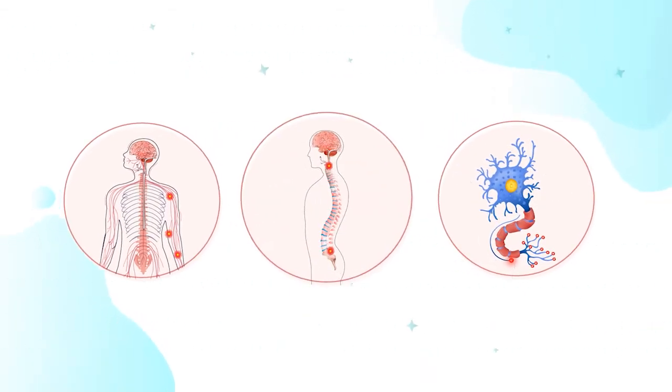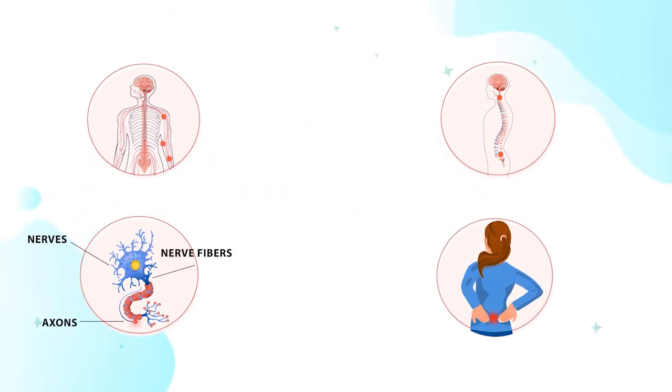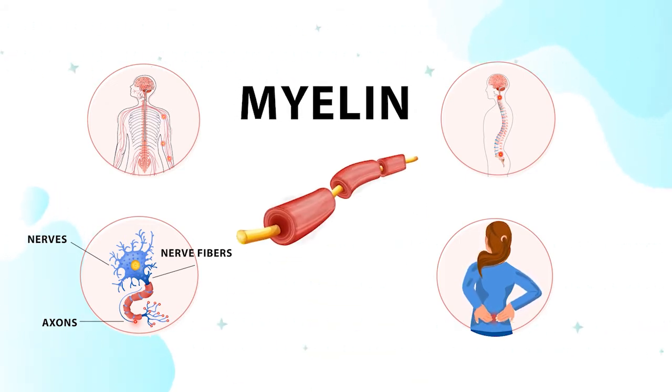The brain or spinal cord reacts to the damage by producing inflammation and scarring. That's what the term sclerosis refers to. The nerve impulses can no longer move quickly down the damaged myelin.